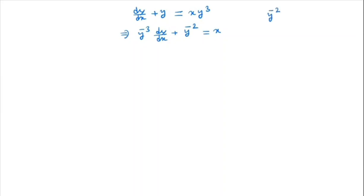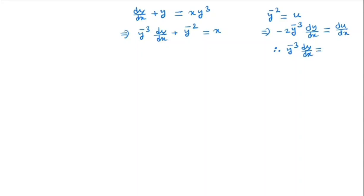We put y to the power minus 2 = u. By differentiating, we have minus 2 · y to the power minus 3 · dy/dx, so y to the power minus 3 · dy/dx is nothing but minus one-half · du/dx.